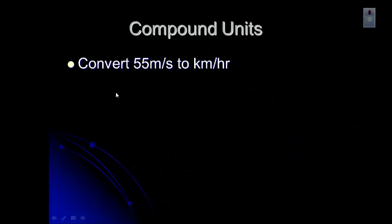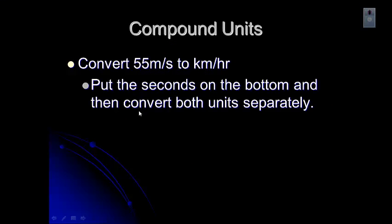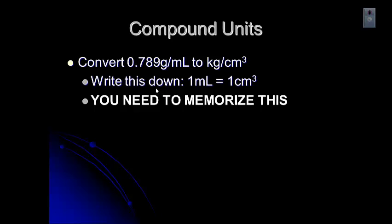Let's try another one. Make sure you put the seconds on the bottom and convert both units separately. When you see meters per second to kilometers per hour, that 'per' tells you that the second unit is on the bottom. Now, this is an important conversion factor you will need to know: one milliliter is equal to one centimeter cubed. You need to memorize this — it's important for conversions, and when we start doing density, you'll understand why.